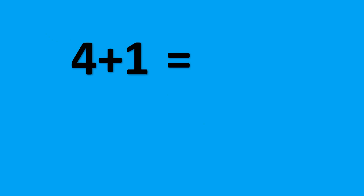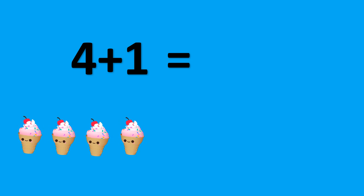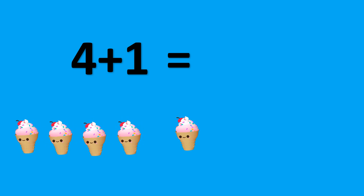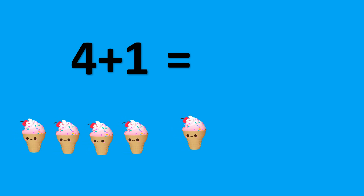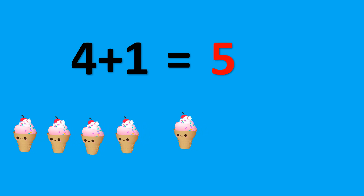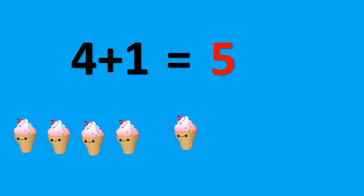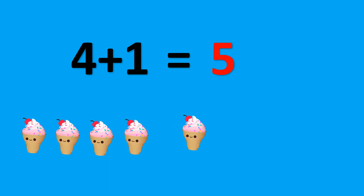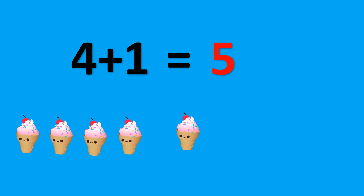4 plus 1. There are 4 ice creams. Let's add 1 ice cream. Now we have 4 ice creams plus 1 more ice cream. This equals 5 ice creams. 4 plus 1 equals 5.